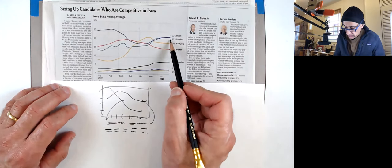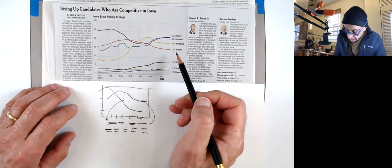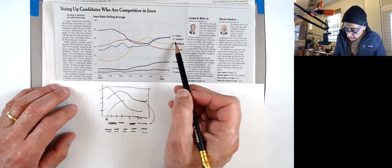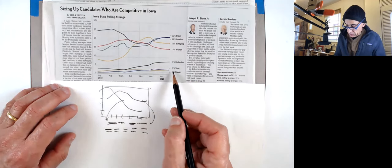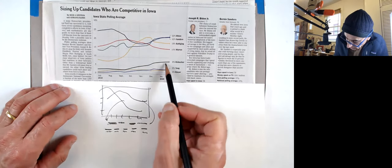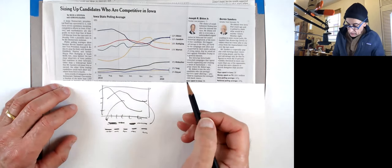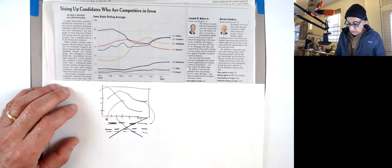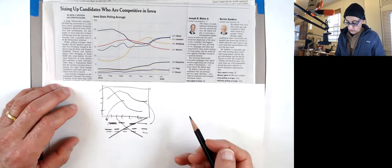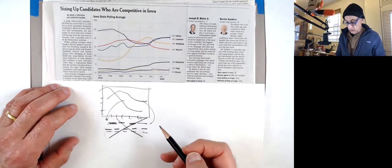You have to constantly jump back and forth between the line and the legend. Why have a legend if you can just label the lines themselves right next to it? Typically that's a good spot right at the end, especially if they are far enough apart.